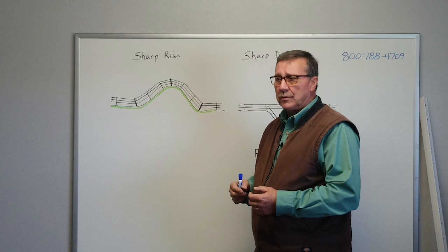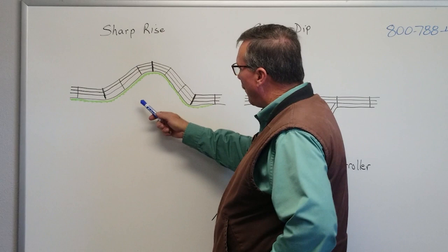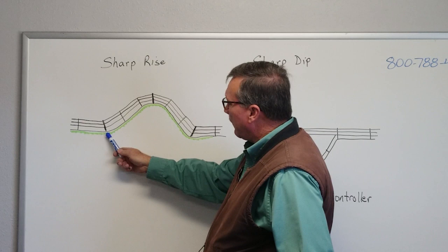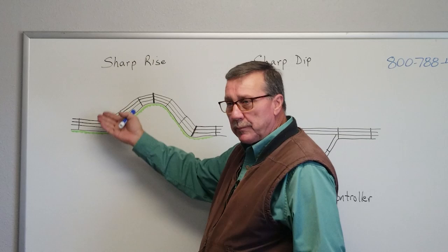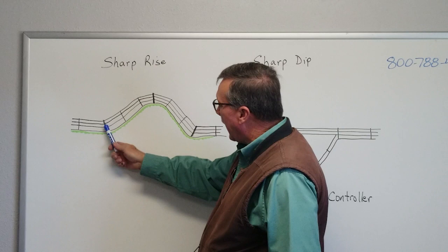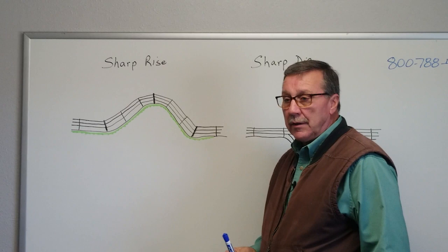First, we'll start out on a sharp rise here. At the base of the hill, we want to have a post that we can anchor into the ground because we're going to get upward pressure. So we put in an H-Post right here. We'll put an H-Post at the top of the hill so it will stand up because you're going to have down pressure on that.